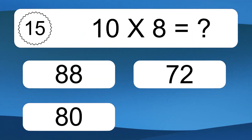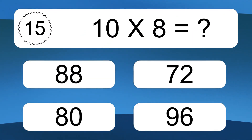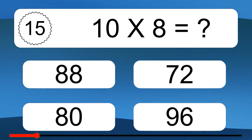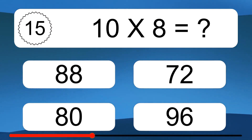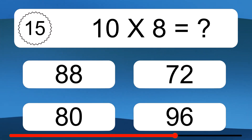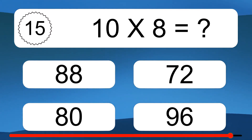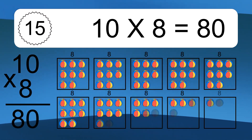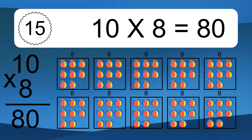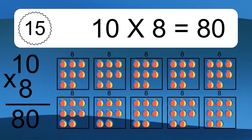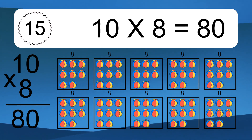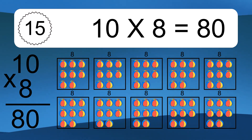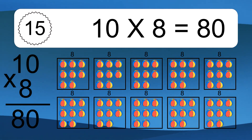10 times 8 equals 80. We have 10 boxes and each box has 8 colorful balls inside. If you count all the balls in all the boxes together, you will have 10 times 8 balls. This equals 80 balls.